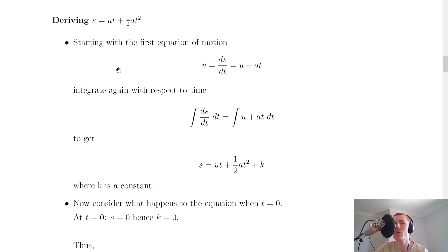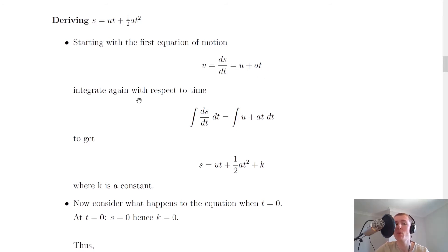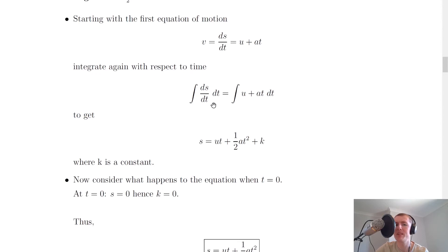Looking at the second equation of motion, we're going to be deriving s equals ut plus a half at squared. Starting with the first equation of motion, v — which we can rewrite as ds/dt — equals u plus at. So we can write ds/dt equals u plus at, and we're going to integrate both sides again with respect to time, just like we did for the first equation of motion.